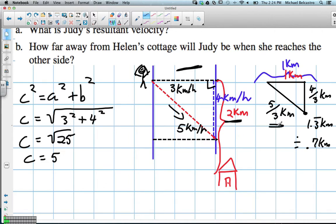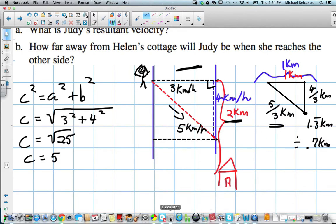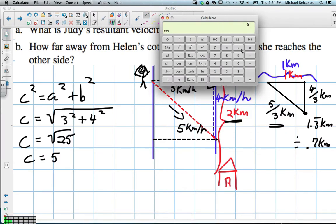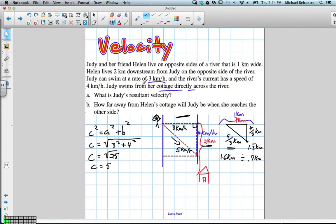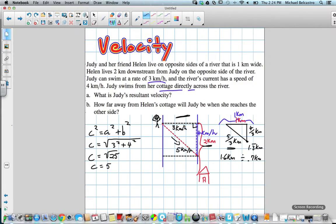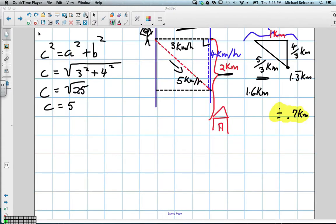And the distance she swam, due to the help of the river and the angle she ended up swimming on, divided by 3, is 1.6. So she swam roughly 1.6 kilometers downstream. How far away from Helen's College would she be when she reached the other side? Yeah, she's still 0.7 kilometers, so 700 meters away. Okay, so to add to this question.